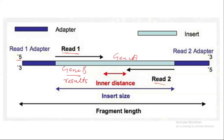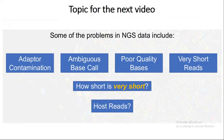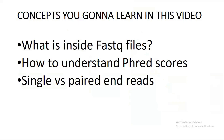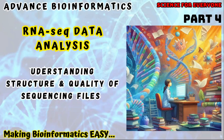In the next video, some problems in NGS data will be discussed, including adapter contamination and ambiguous base codes. I will discuss in detail what are ambiguous base codes and why they are generated. I recommend watching each and every video in order — this will help you understand the real RNA sequencing data analysis technology. Start from the very beginning and watch each video. If you have any questions, comment or email me. Stay tuned, see you in the next video, thank you very much, God bless you.